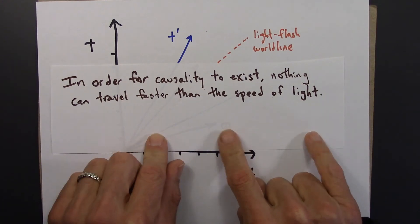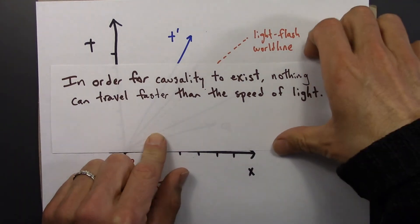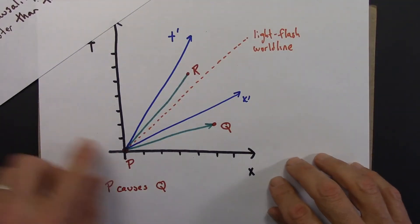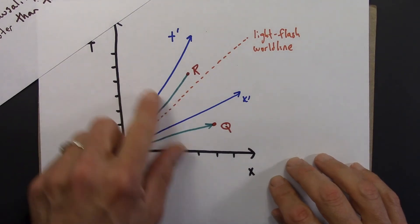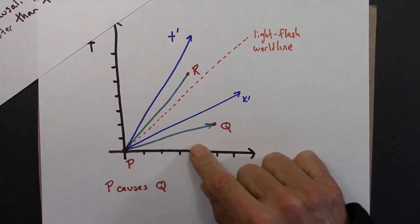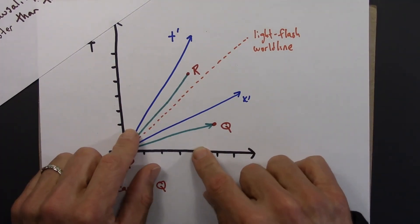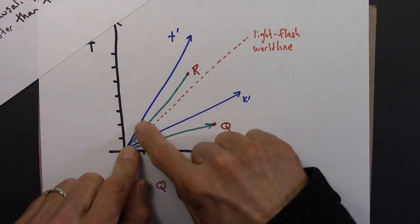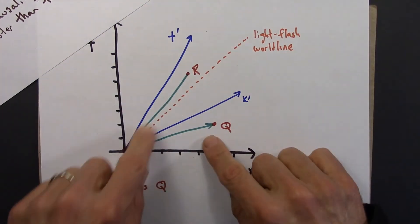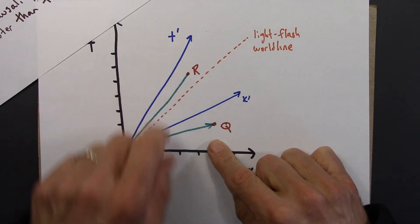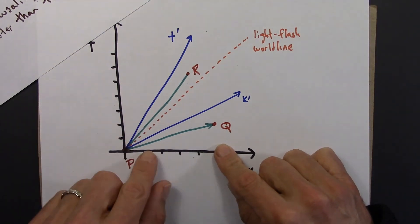In the next several videos, we're going to look at this geometrically in much more detail. We'll get a hint here that space-time is broken down into different regions, and indeed we'll see that there are different regions with different causal structure.